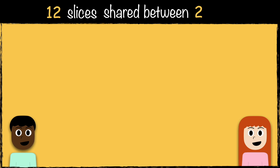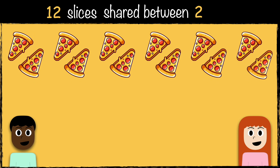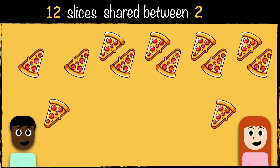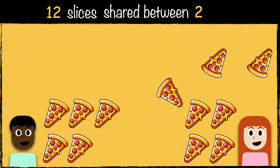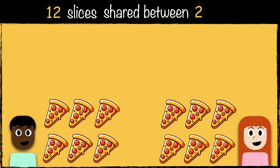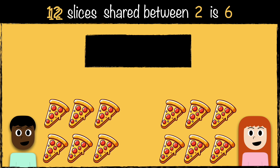Here's the last example. We have 12 slices of pizza and we need to share them equally between two friends. How many slices will each friend get? Let's start by giving them one each. We still have quite a lot left over, so we're going to continue giving them one each until we have none left. Each person got six slices. So 12 slices of pizza shared equally between two people is six. This is how we write it as a calculation: 12 divided by two equals six.